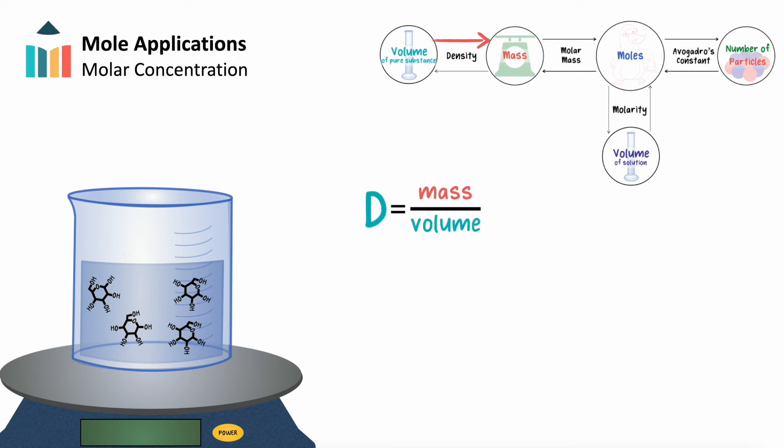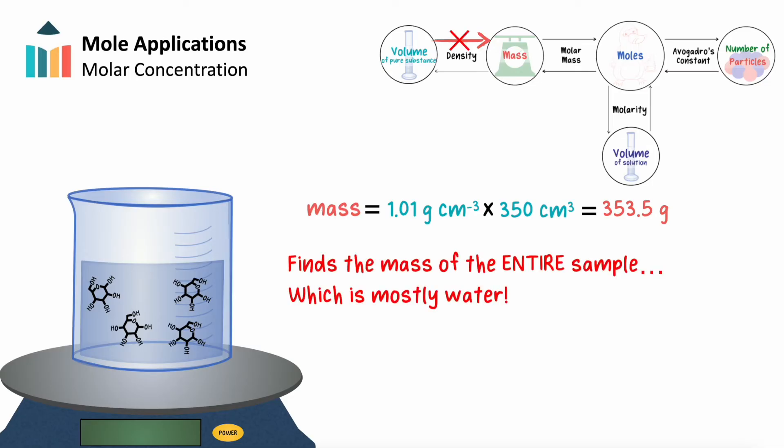Say we know the density of the glucose solution, and after multiplying it by the solution's volume, we find that it has a mass of 353.5 grams. That seems like a lot, and it is because that's the mass of the entire solution, meaning it's the mass of mostly water. Finding this would be like placing the solution on a scale after adjusting for the weight of the beaker.